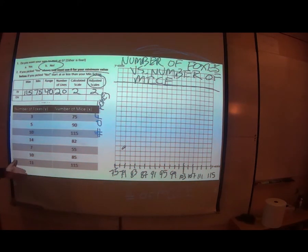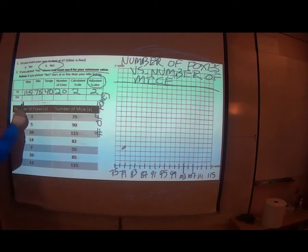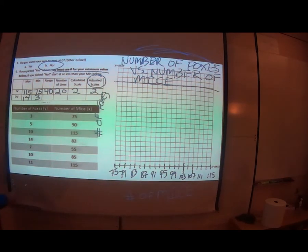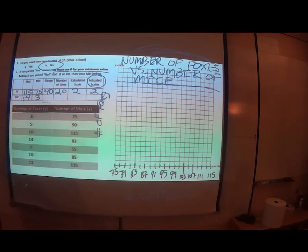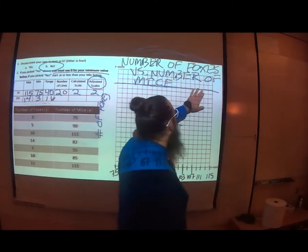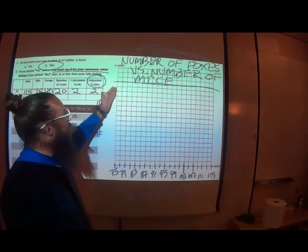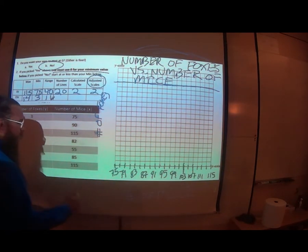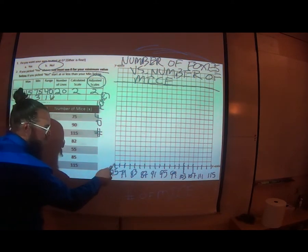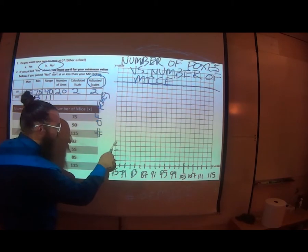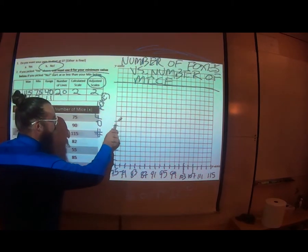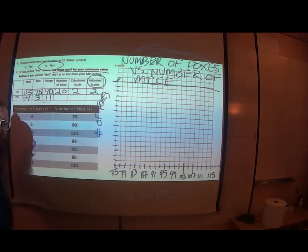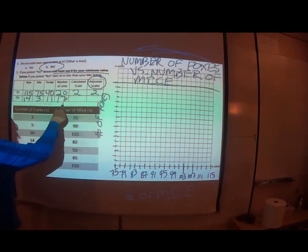Now we do the same thing for the dependent variable. Our biggest number for our dependent variable is 14. Our smallest number is 3. To find our range, we subtract 14 minus 3, gives us 11. Now we've got to count the lines. We're not going to use those top three lines. So we have 17 lines. Then we're going to do a little division - 11 divided by 17, that gives us 0.64.